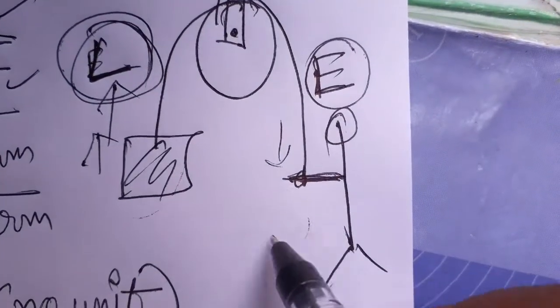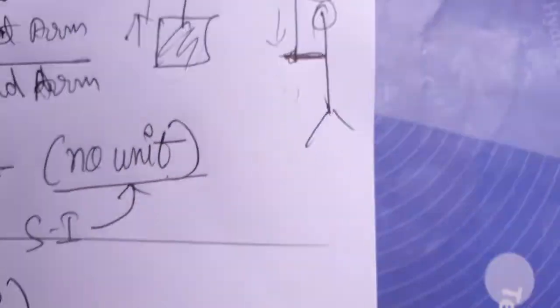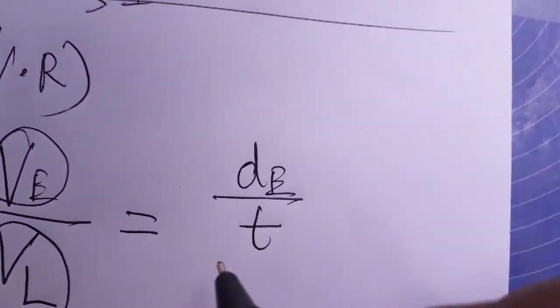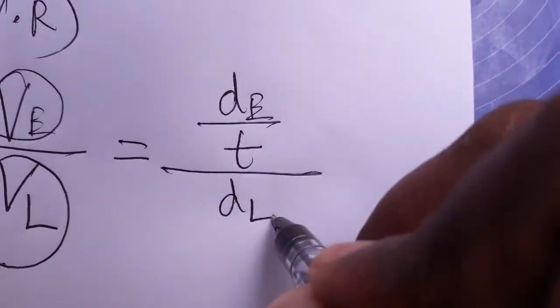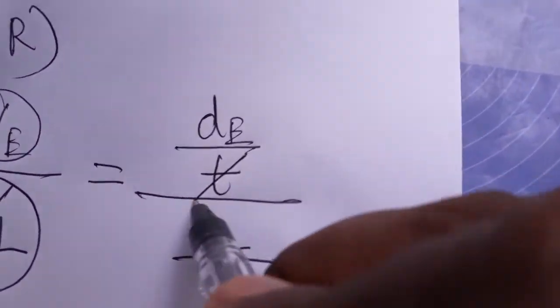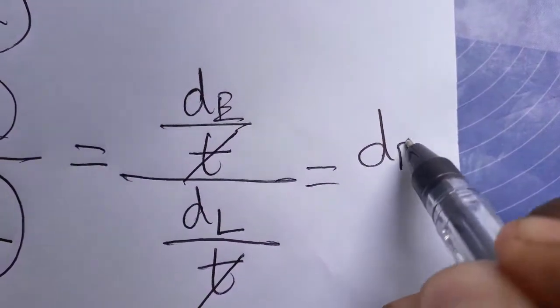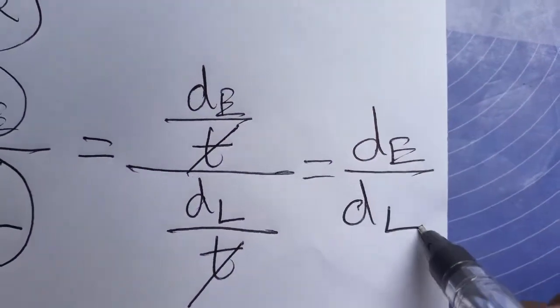Velocity of the effort will be distance traveled by effort divided by time period, and velocity of the load is distance traveled by the load divided by time period. Since it's going to happen at the same time, the time gets cancelled. So it becomes distance of effort arm by distance of load arm.